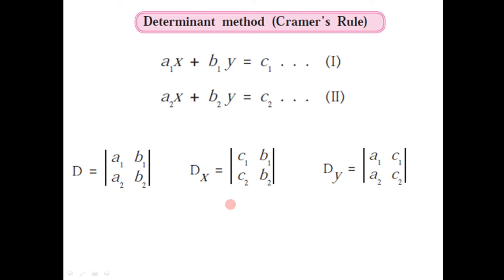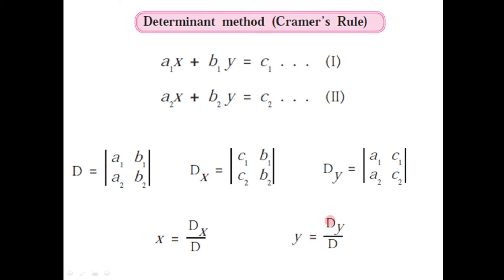By having these three determinants D, Dx, and Dy, we have the formula for finding the values of x and y. The value of x is given by Dx divided by D, and the value of y is given by Dy divided by D. These are the two formulae by which we can find the solution of given simultaneous equations.